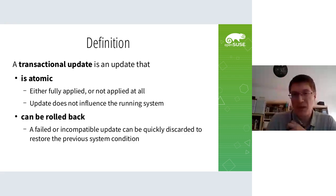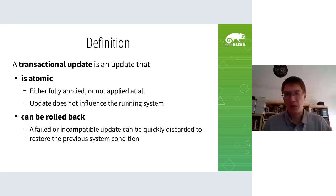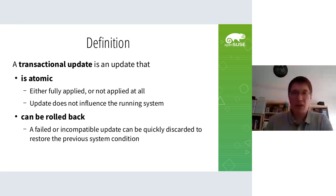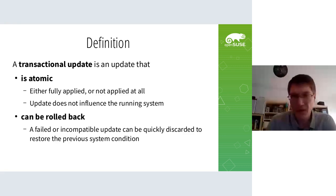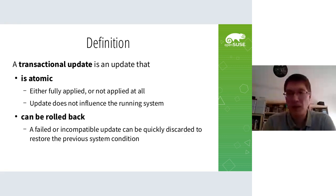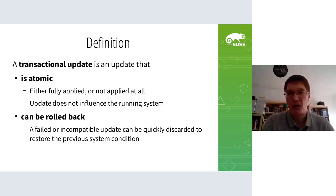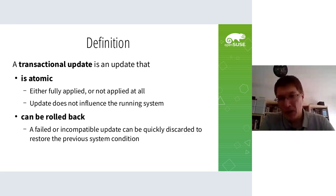The important part - and I will come back to this later several times - is that the update must not influence the currently running system. That's one of the basic design principles the mechanism is built around, and it explains a lot of the decisions about why and how things work. The second part is that a transactional update is an update that can be rolled back. If anything goes wrong, we can always roll back to a previous known, well-working snapshot.